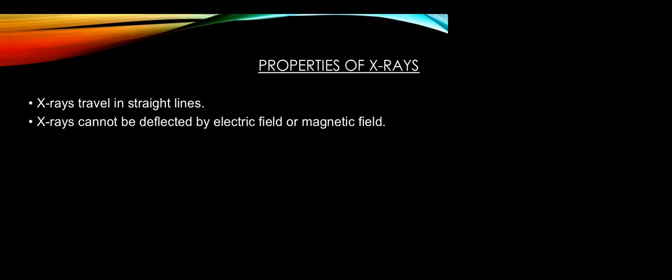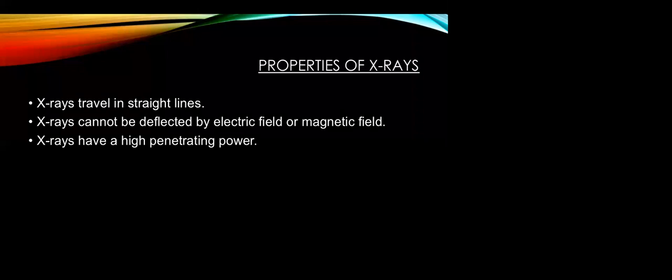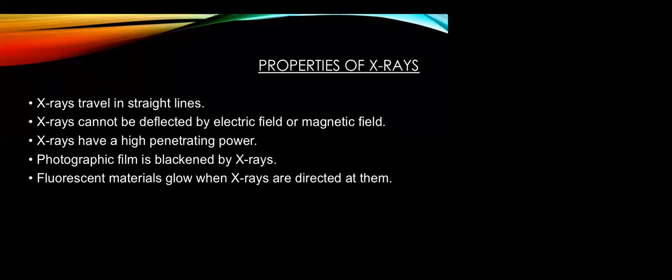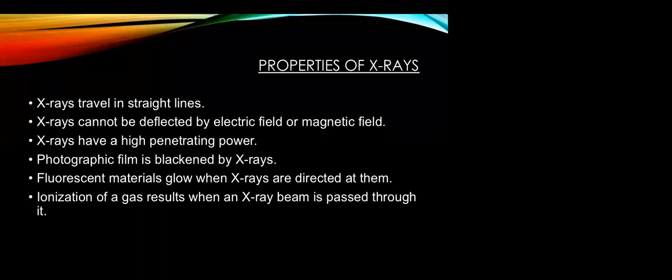A few lines about properties of X-rays. X-rays always travel in straight lines. They cannot be deflected by electric or magnetic fields. X-rays have a high penetrating power, which we know as they penetrate through X-ray films. Photographic film is blackened by X-rays. Fluorescent materials glow when X-rays are directed at them, which actually led to the discovery of X-rays. Ionization of a gas results when an X-ray beam is passed through it.